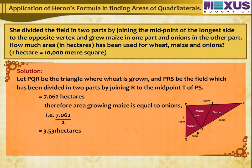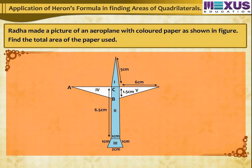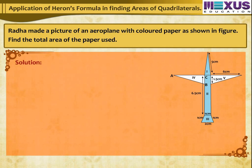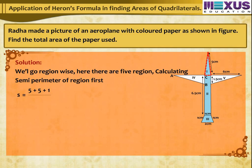Let's go to the next example. Radha made a picture of an aeroplane with colored paper as shown in the figure. Find the total area of the paper used. Solution: We'll go region wise. There are 5 regions. Calculating the semi-perimeter of region 1: S = (5 + 5 + 1) ÷ 2 = 5.5 centimeters.